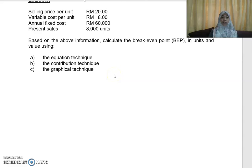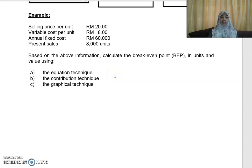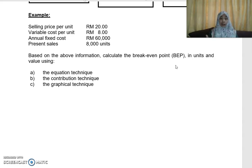Using the equation technique, we want to find the break-even point — how many units we need to sell in order to break even. Break even means you are not making any profit and not making any losses. That is the minimum quantity we need to produce and sell. Anything below the break-even point means you are making losses.